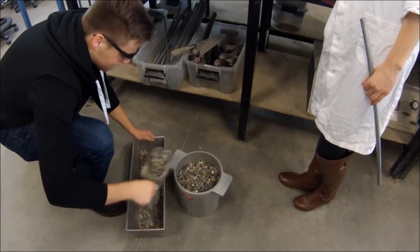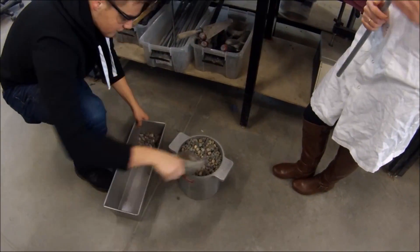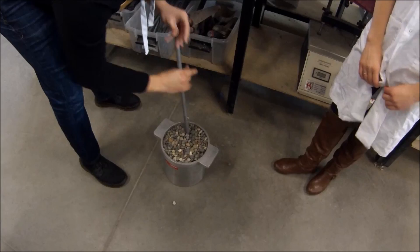Add a final layer of aggregate to completely fill the cylindrical measure until it is overflowing, and rod 25 times as in previous steps.